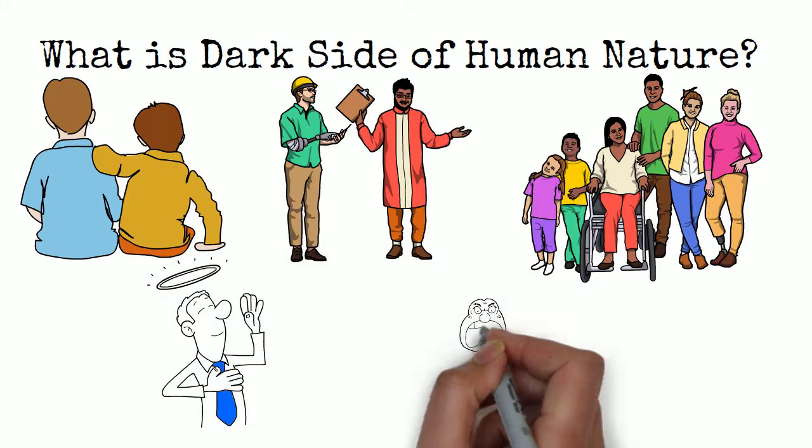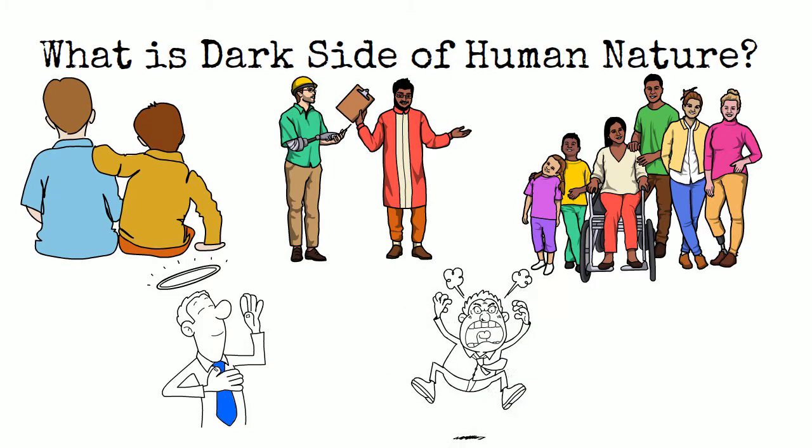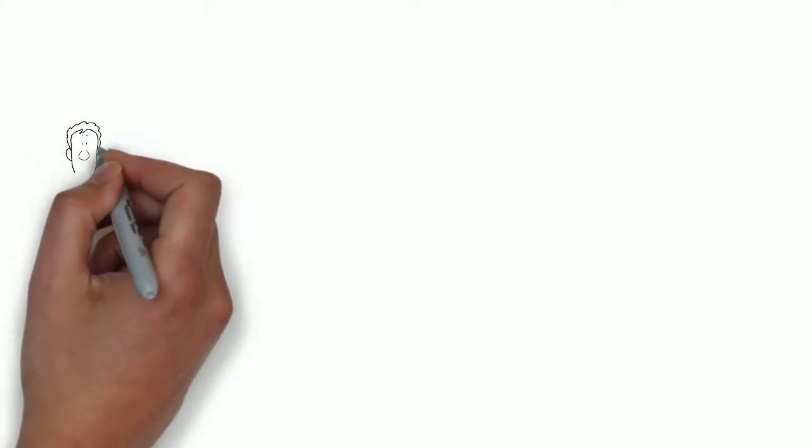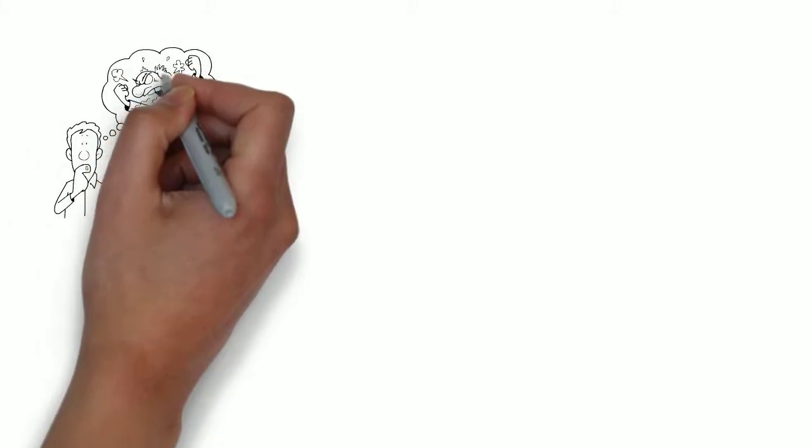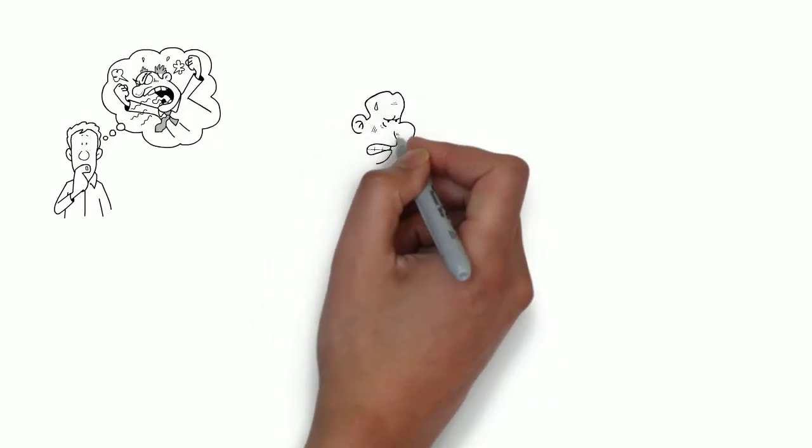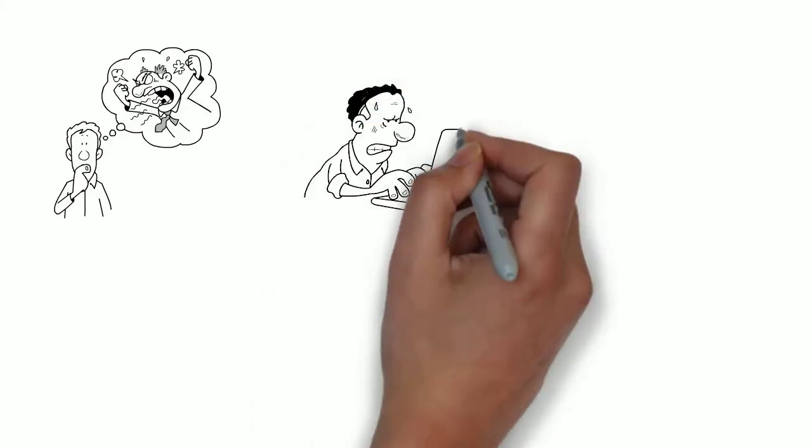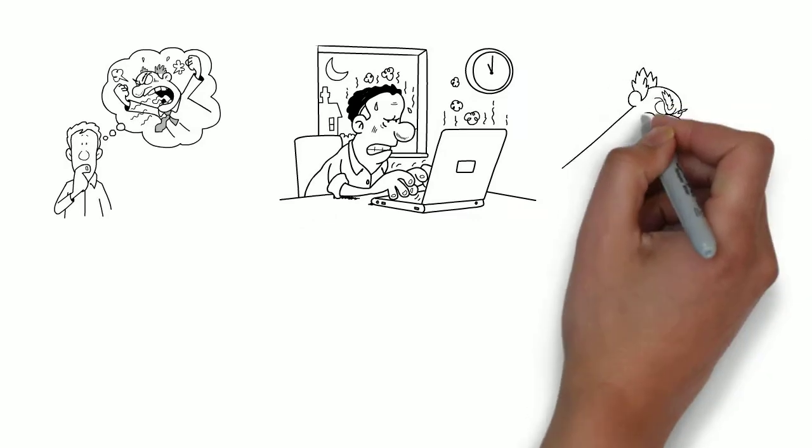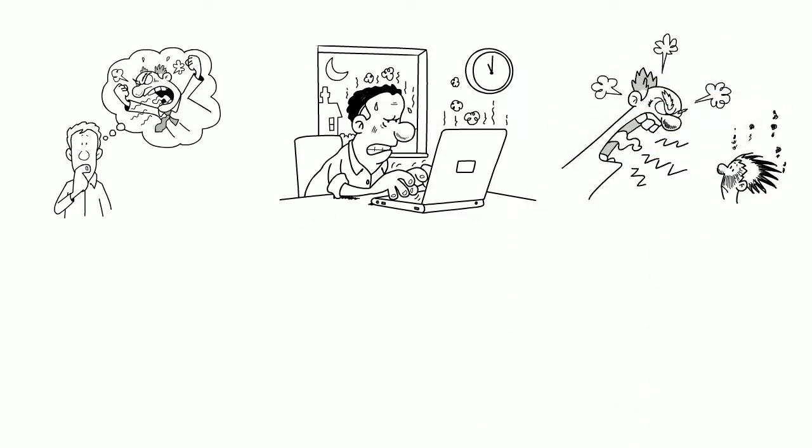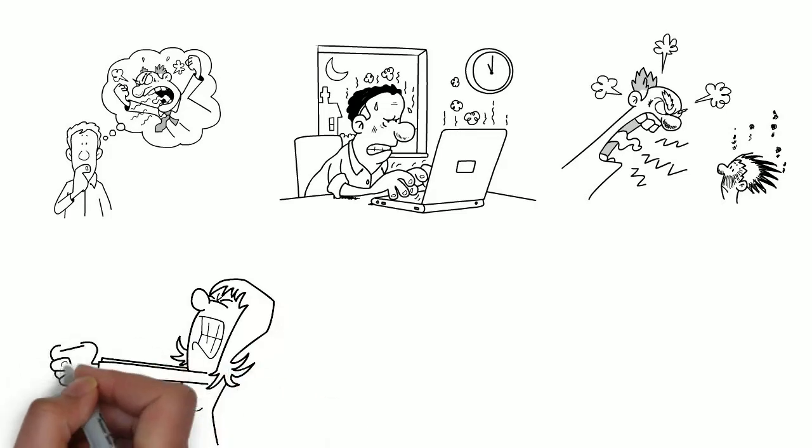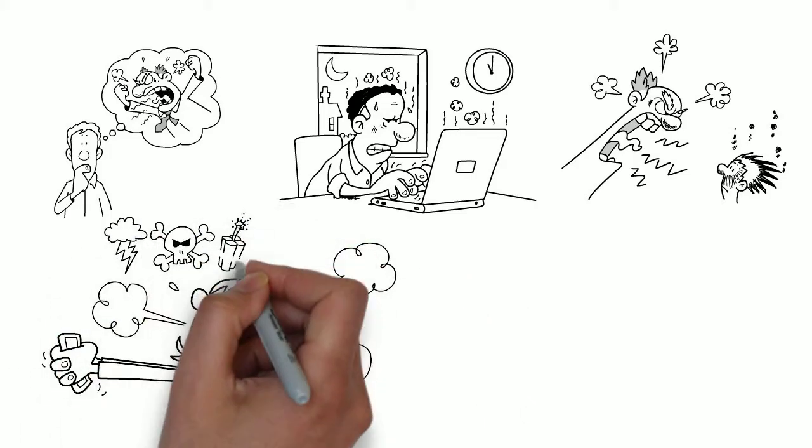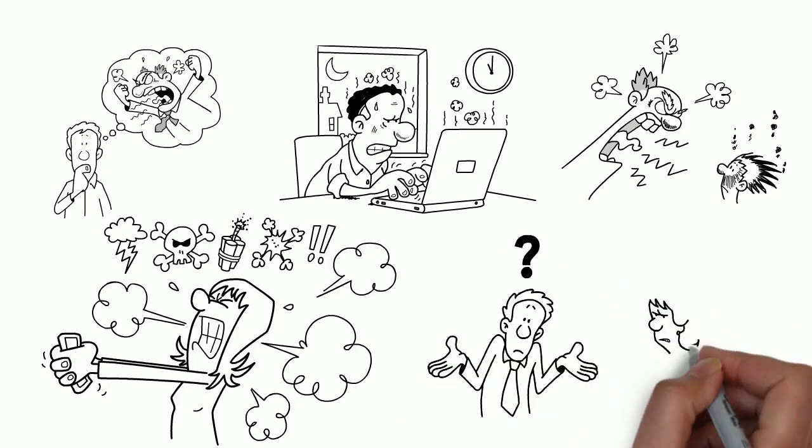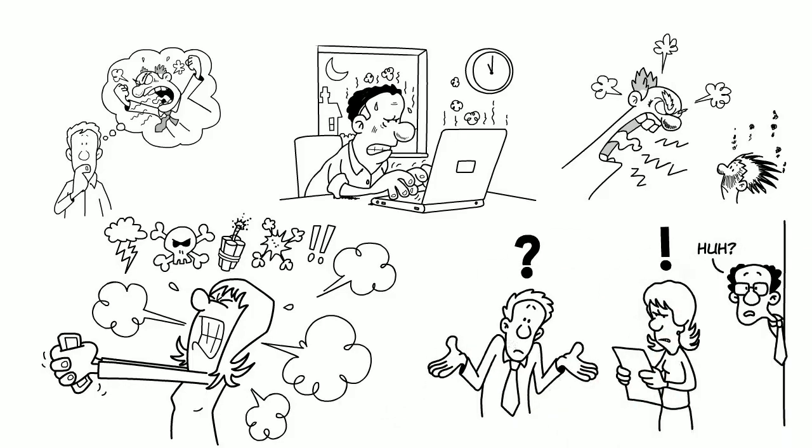But sometimes we see them behave in ways that differ, opposite or contradict what we know about them. This can be because they are under a lot of stress or trying to cover up something. Sometimes people do mean or hurtful things without any explanation. It might be because they're having a bad day or are jealous of you. But usually people who are nice don't suddenly act mean for no reason.